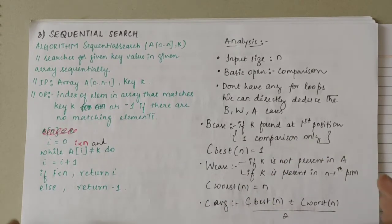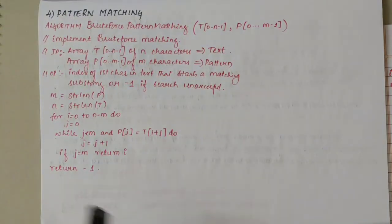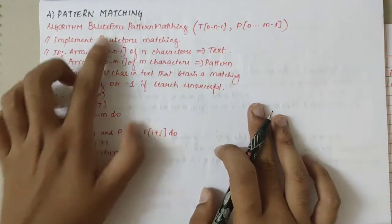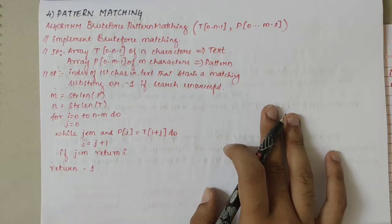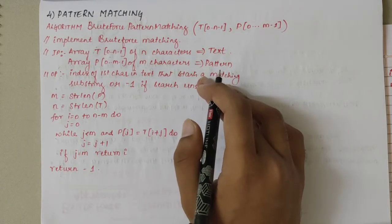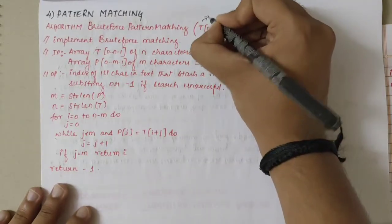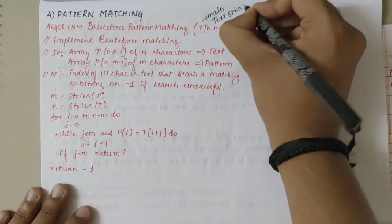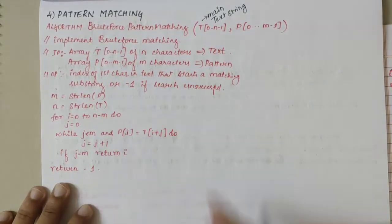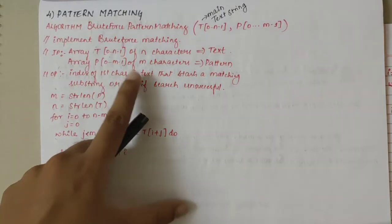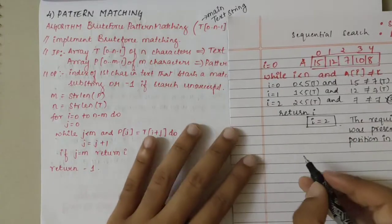This was about sequential search. Now let's look into the pattern matching algorithm. It is also called brute force pattern matching or string matching. In this, we consider two strings: one is the main string T (the text string) and the other is the pattern string P. The text string T will have n characters from index 0 to n minus 1, and the pattern string P will have characters from index 0 to m minus 1.